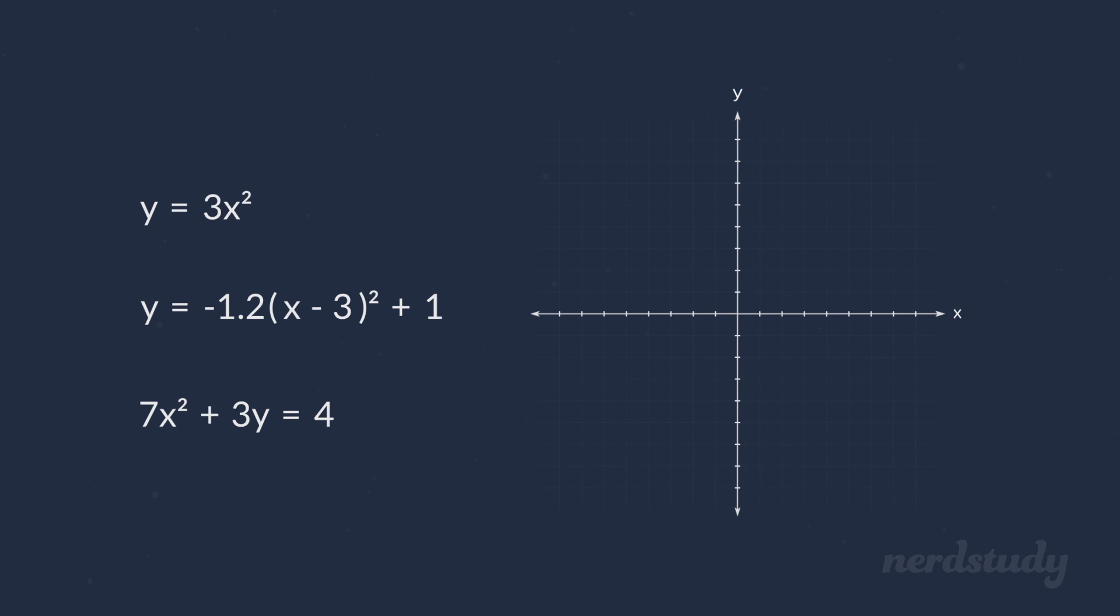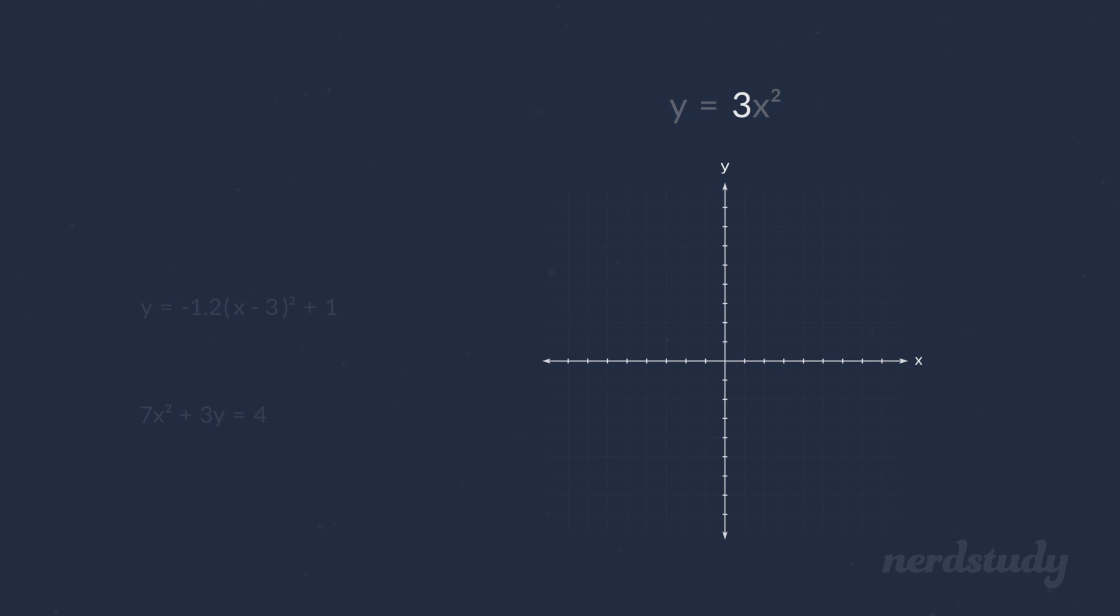Well, finding the answer wouldn't be too difficult, since all you'd have to do is look at the a value. Is it negative or not? As you can see in this example, the a over here is positive. This means that our graph is opening upwards, and any parabola that opens upwards has a vertex that is a minimum. Let's take a look at the next example.